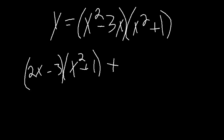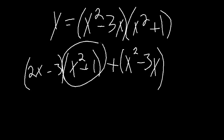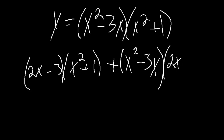Then we add. Because we took the derivative of the first part, we're going to leave it alone for the second part. Now, because we did not take the derivative of the second function, we're going to do that now. The derivative of 2x, using the power rule, is just 2. And the derivative of a constant is always 0, so we don't have to write that out.